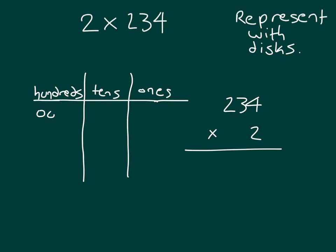234 — that is two hundreds, three tens, and four ones. And what are we multiplying by? We are multiplying by 2. So what do we do in the ones place? Another group of four ones.